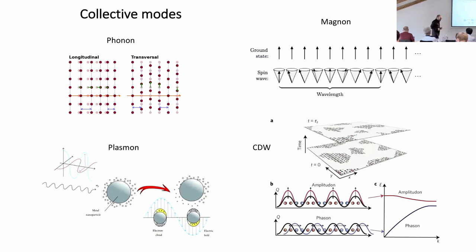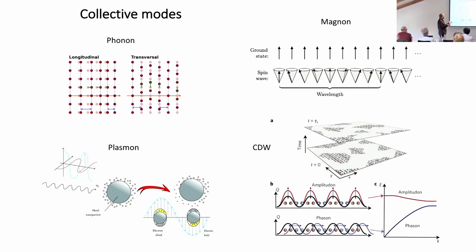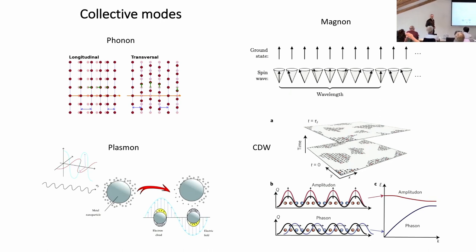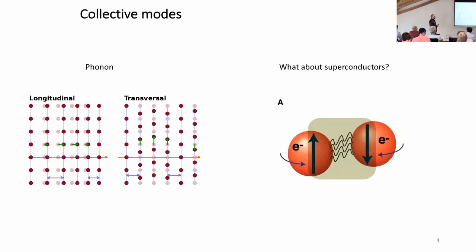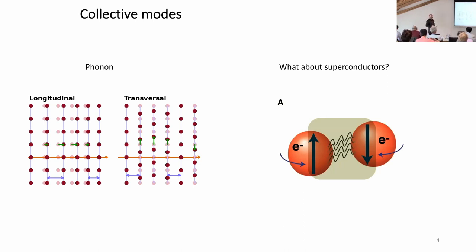We are interested in collective order parameter oscillations of the superconducting condensate. Collective modes are fascinating - we know phonons from lattices, magnons from spin waves, and plasmons from electrons. In correlated materials we can look at amplitude and phase modes of a charge density wave, for example. The question is: how do we really look at the collective modes of a superconductor? If I want to understand lattice dynamics, I can perform Raman spectroscopy and learn about crystal symmetry, electron-phonon coupling, and so on. The key idea is whether we can apply such spectroscopy to the superconducting condensate.